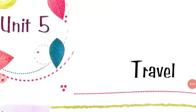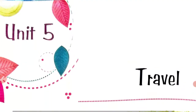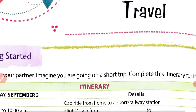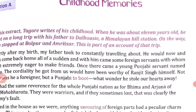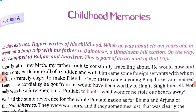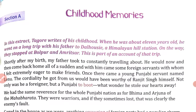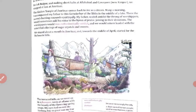Hello students, welcome back to CG Board online classes. Today we are going to start unit 5, Travel. We have already done the introduction of this unit — what traveling is about and what an itinerary is. In this video we are going to start section A: Childhood Memories. It is written by Rabindranath Tagore.